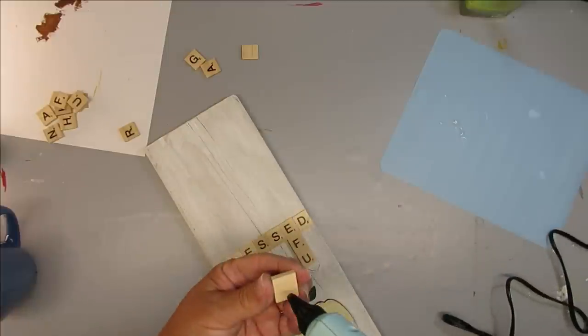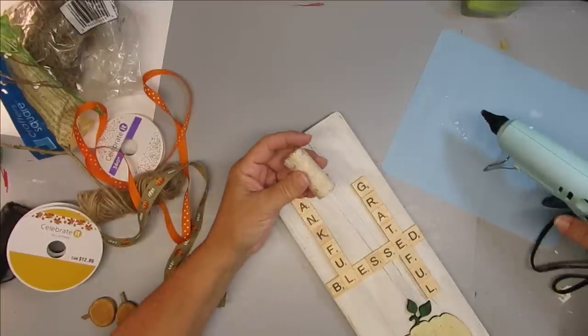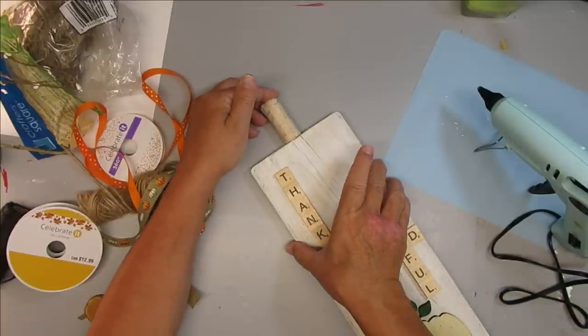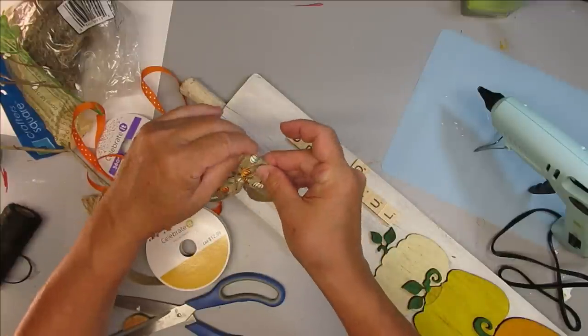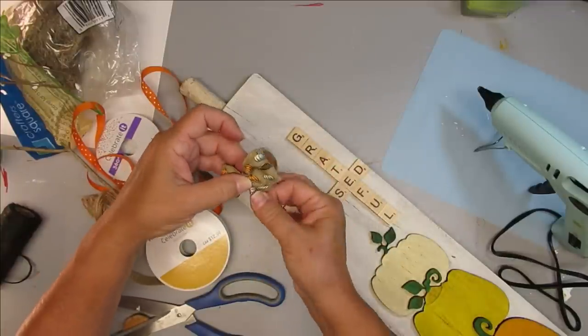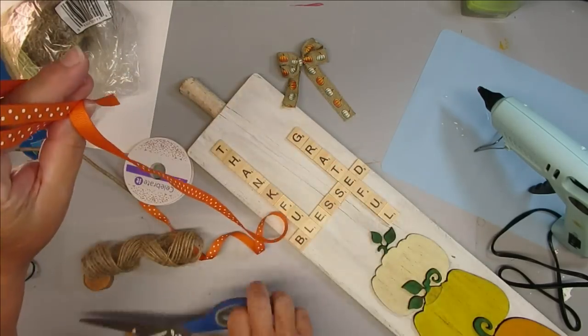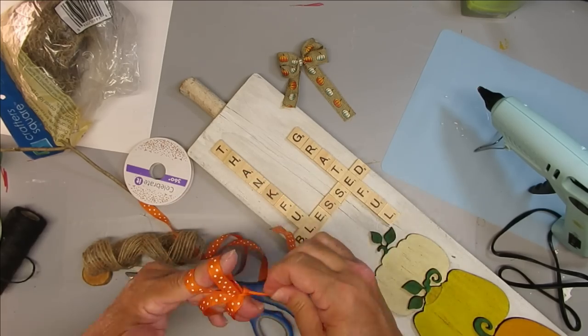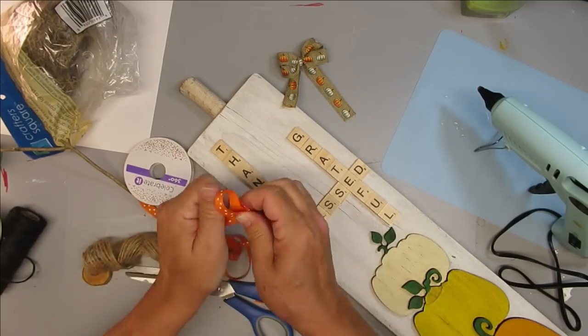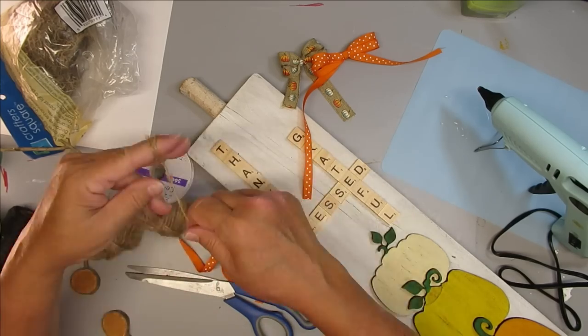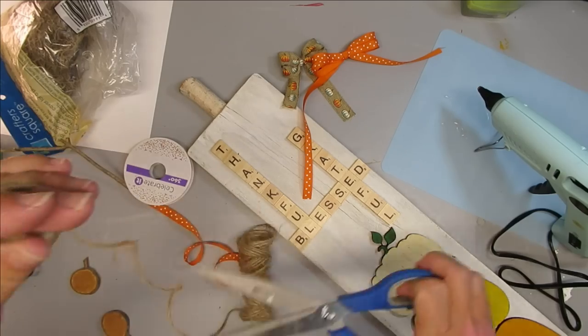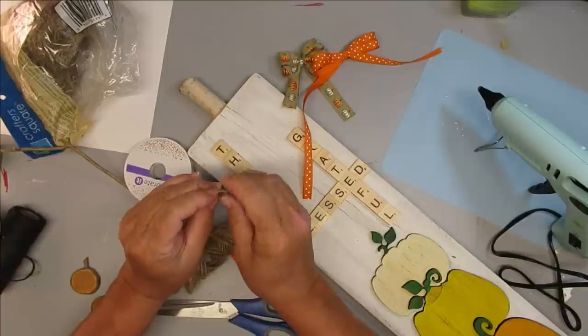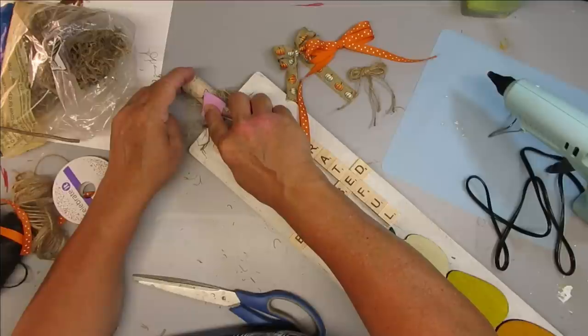My favorite part of crafting is once I have the base done, adding all of the little embellishments. I'm starting by adding this little birch piece of wood from the Dollar Tree. Next I'm going to take three different types of twine and ribbon and make some bows and layer them on top of each other. For the chunky twine bow I'm wrapping it around my fingers about six or seven times, then tying it off in the center with another piece of twine.